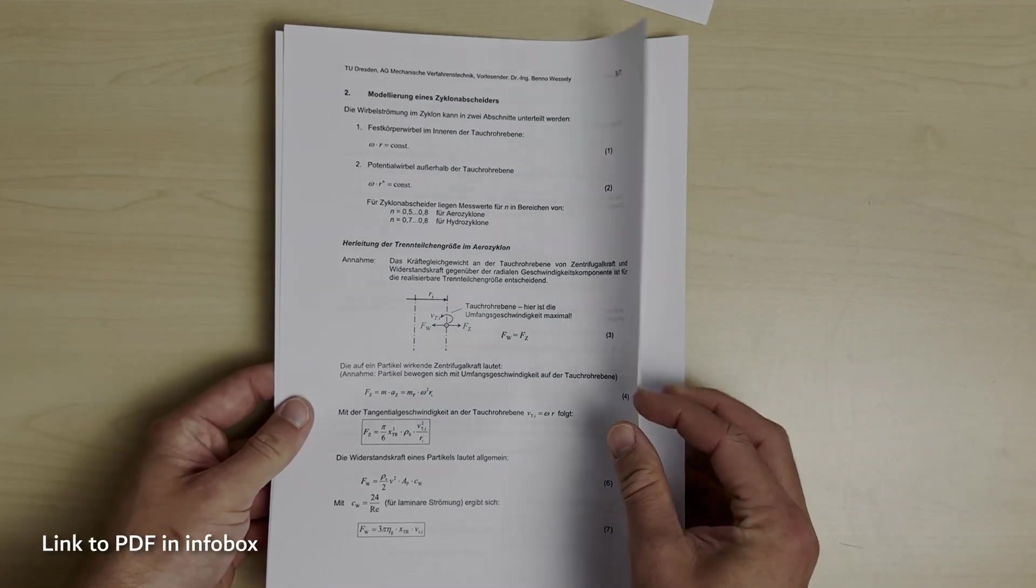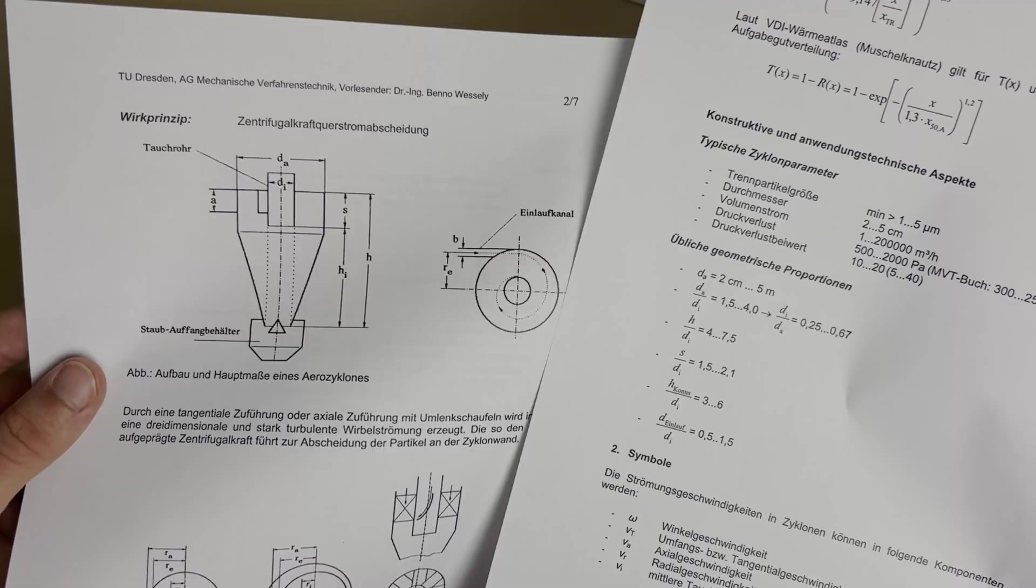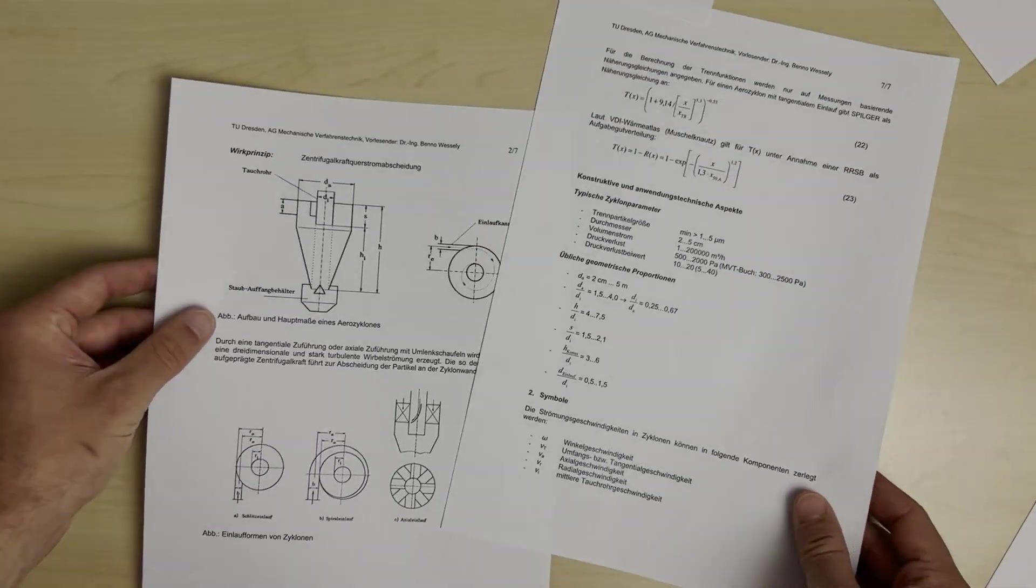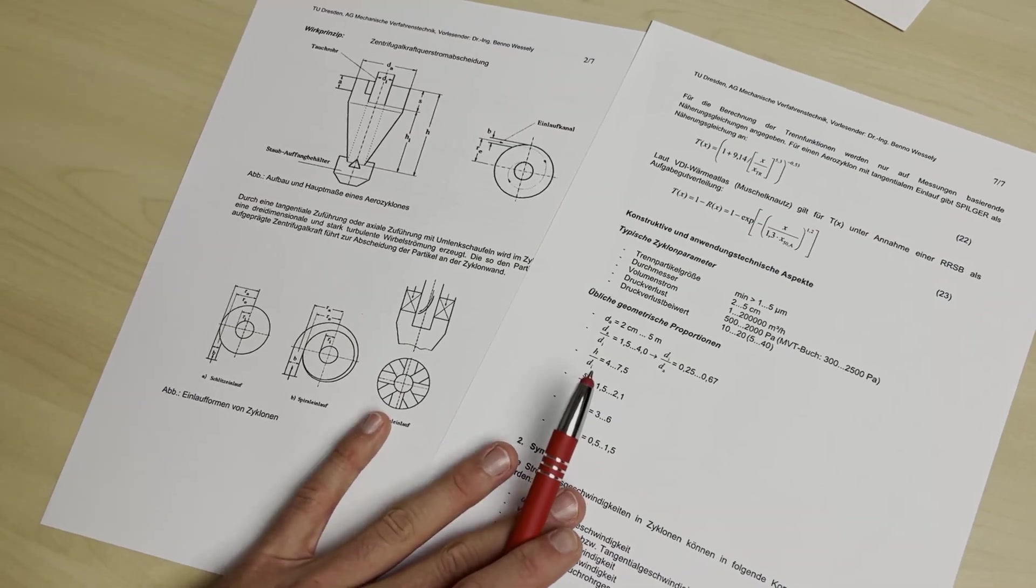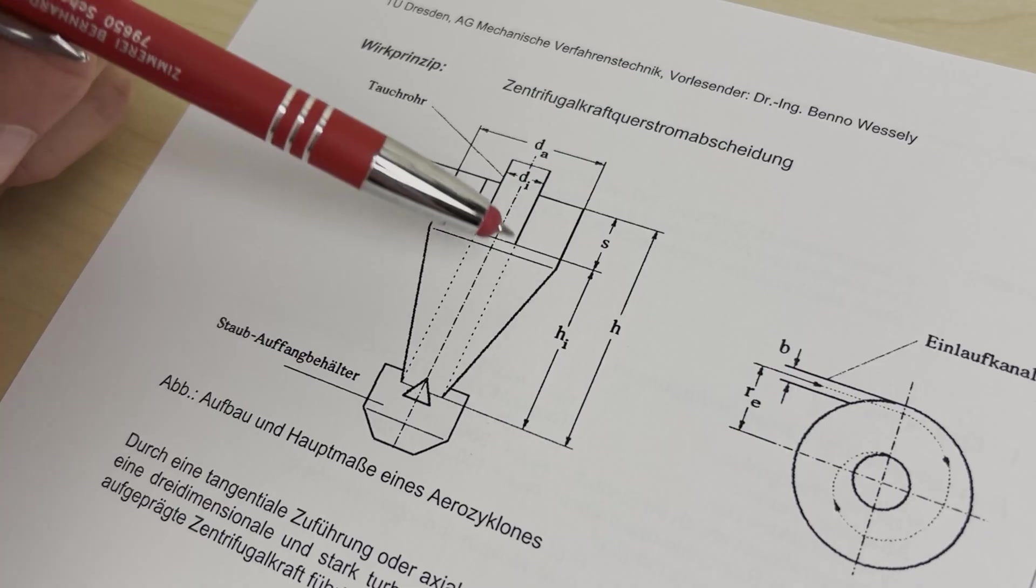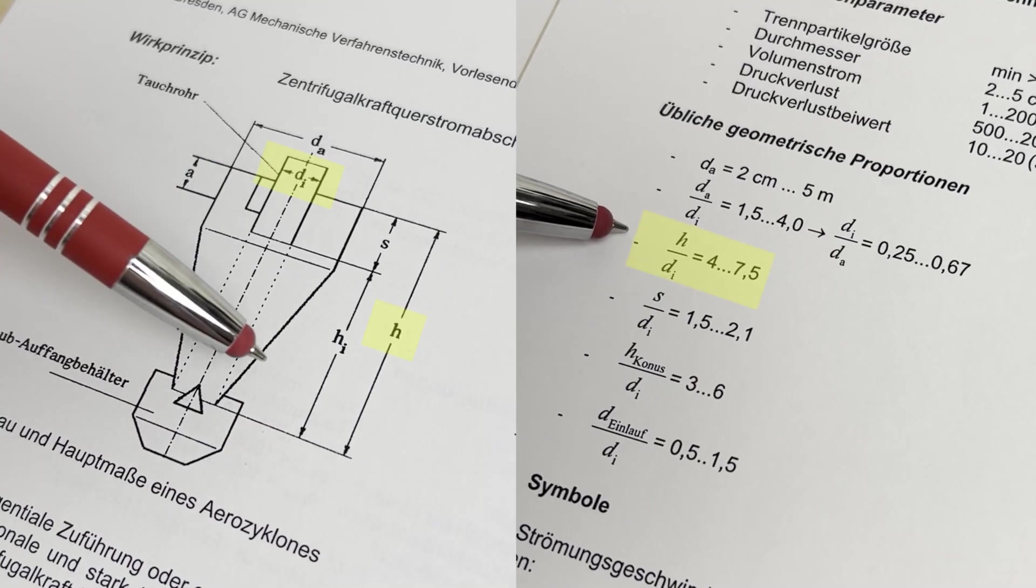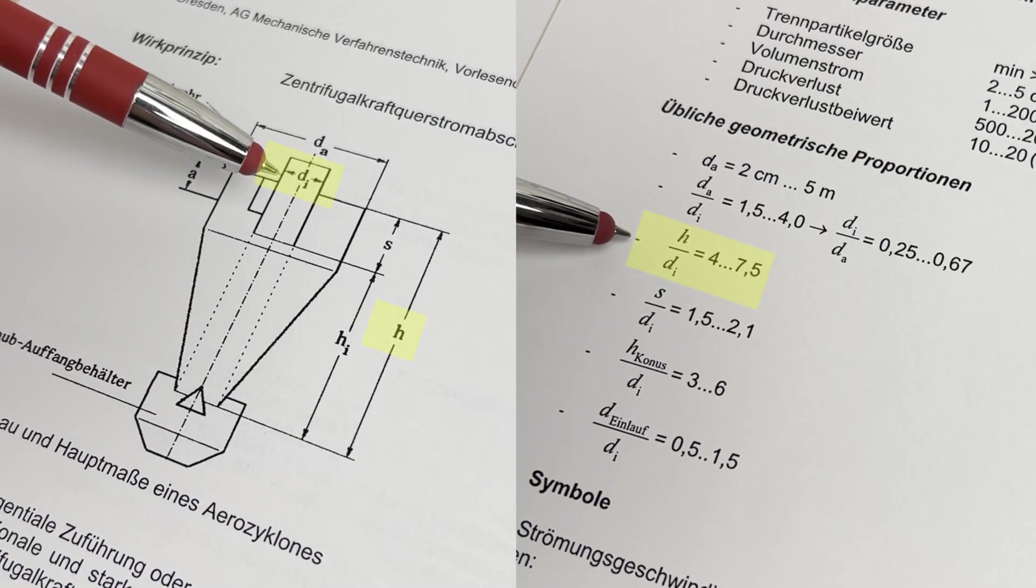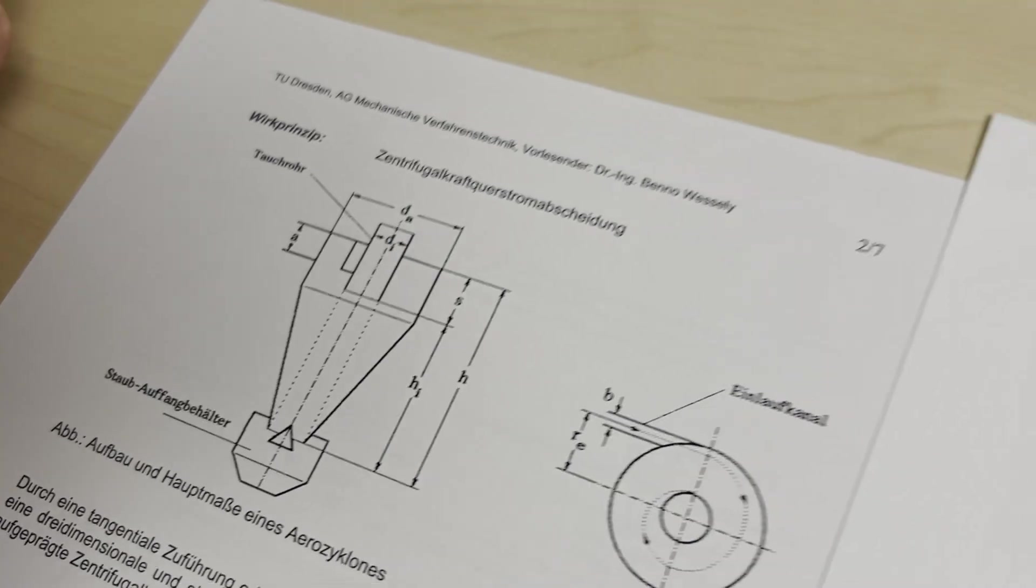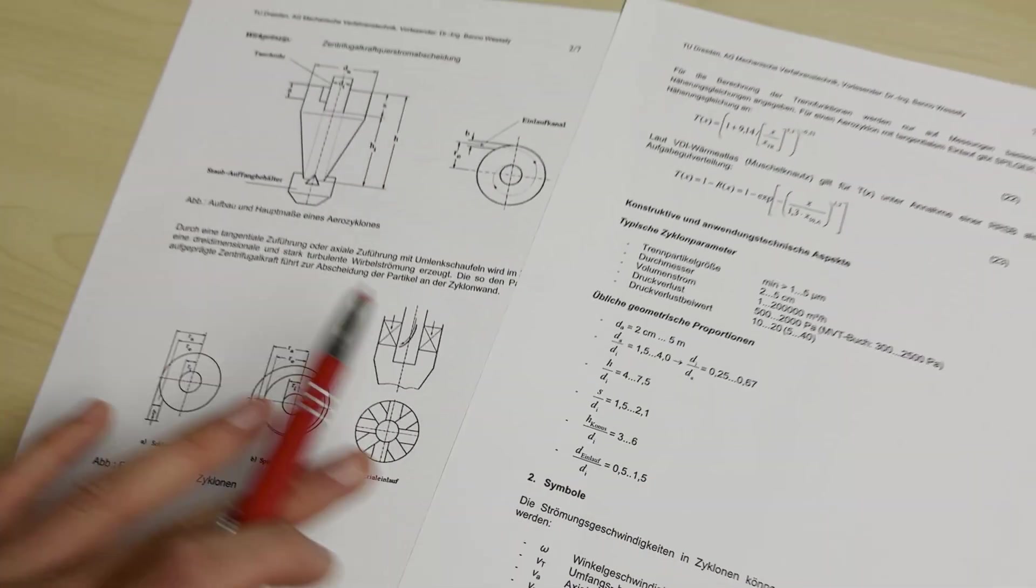I found this white paper on cyclones from the TU Dresden to get the proportions somewhat right. This is super interesting to me. There are many factors that affect the efficiency of a cyclone, like the depth of the dip tube, the diameter to length ratio, the angle of the cone, and so on. There's really a whole art to designing these proportions, depending on the application you need.